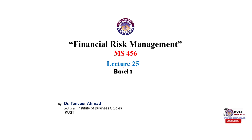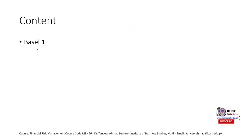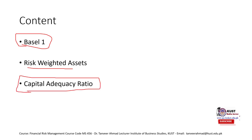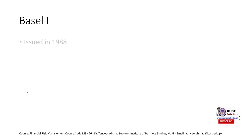Welcome to Lecture 25 of Financial Risk Management. This lecture will cover the Basel Accord One, or Basel I. The contents include: what Basel I is, its requirements, what Risk Weighted Assets (RWA) are, and how to calculate the Capital Adequacy Ratio (CAR).